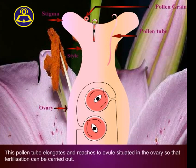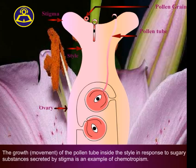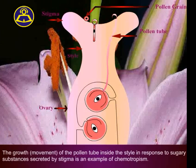This pollen tube elongates and reaches the ovule situated in the ovary, so that fertilization can be carried out. The growth or movement of the pollen tube inside the style in response to sugary substances secreted by the stigma is an example of chemotropism.